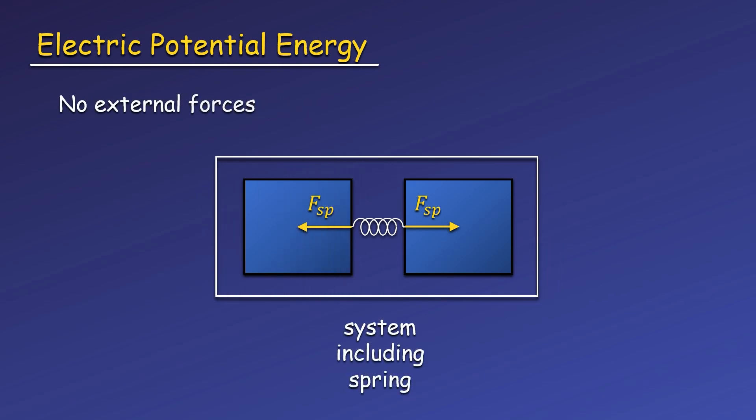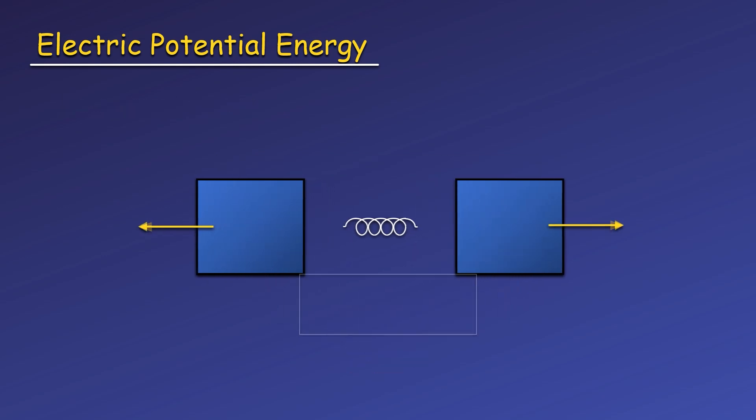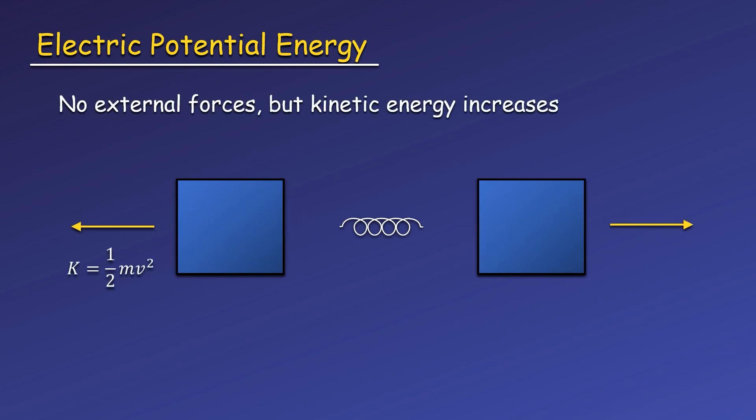But if we define our system as the blocks and spring, now there are no external forces acting on the system as the spring is internal. When the blocks are released, the blocks still increase in kinetic energy. So how do we explain this increase in kinetic energy without external forces doing work? Well, there must have been energy that was stored when the blocks were compressing the spring, and this energy was transferred from the spring to the blocks and transformed from stored energy to kinetic energy. We call this stored energy potential energy. Using conservation of energy, we find this change in energy must be equal to minus the work done by these internal interactions — in this case, interactions with the spring. The minus sign is there because the stored potential energy must be decreasing as the work is being done, or as the kinetic energy is increasing.